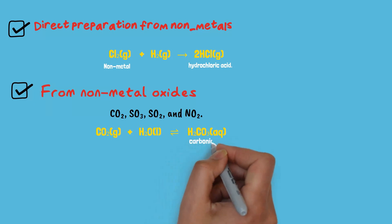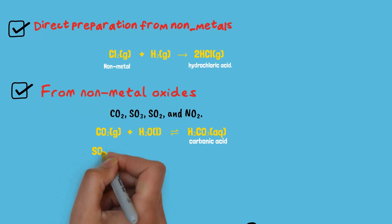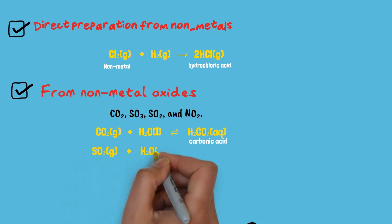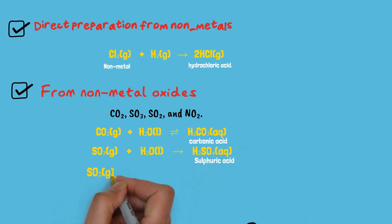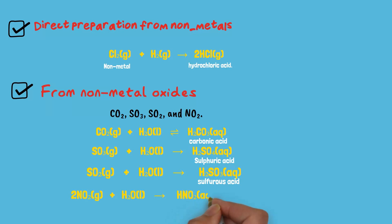For example, CO2 reacts with water to form carbonic acid that is H2CO3. SO3, which is sulfur trioxide, reacts with water to form sulfuric acid. Sulfur dioxide reacts with water to form sulfurous acid. Similarly, NO2, which is nitrogen dioxide, reacts with water to form nitric acid and nitrous acid.